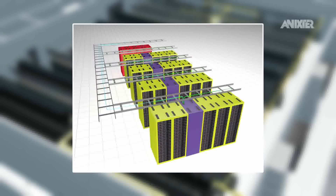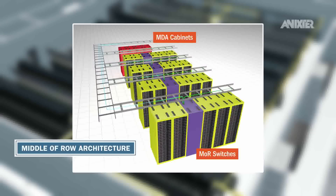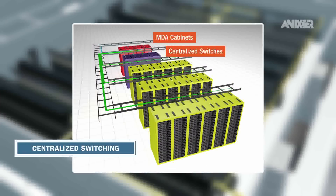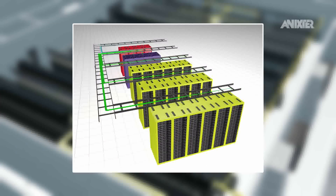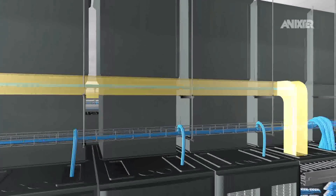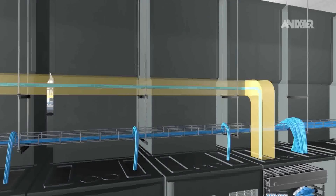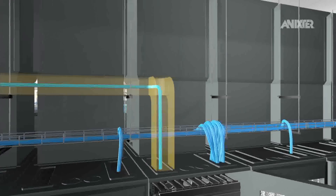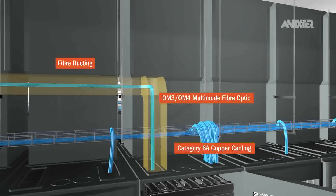Traditional cabling architecture may support centralised switching in a row of the horizontal distribution area cabinets and racks. Due to shorter reach requirements, OM3 and OM4 multi-mode fibre optic cabling is utilised for backbone connections and Category 6A copper cabling